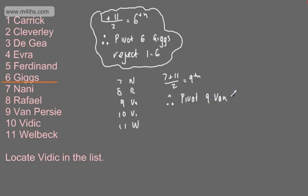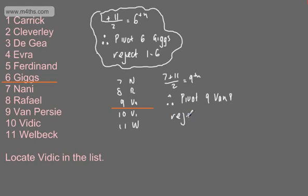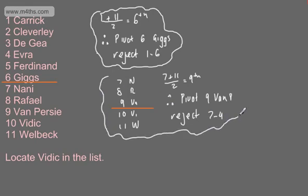So we've got Van Persie as the pivot. If we consider that Vidic is going to be lower than Van Persie, then we can reject 7 to 9. That now leaves me with a shortened list of 2 items. At this stage, we can't just say we found him - what we have to do is the following. We've got position 10, which is Vidic, and position 11, which is Welbeck.